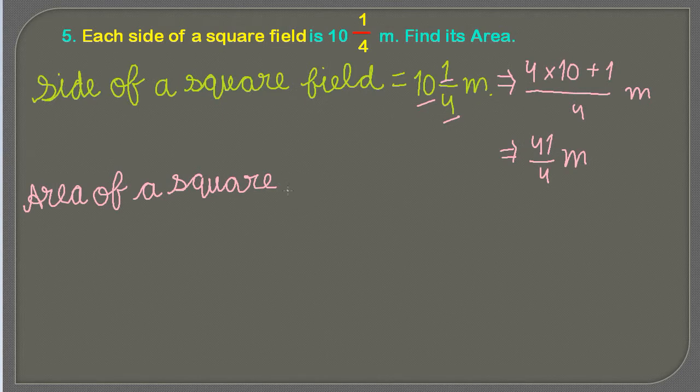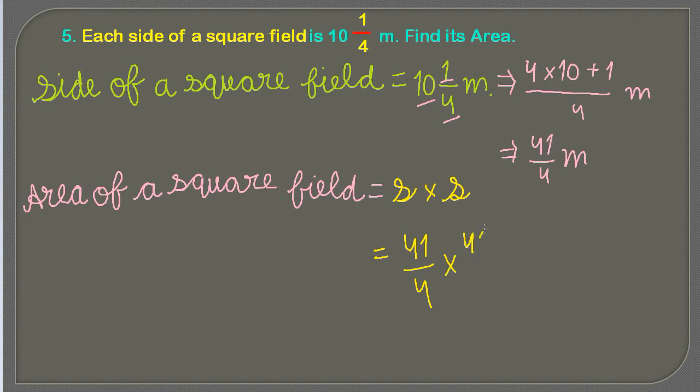Is equal to, in this case I am using side s, s into s. That would equal to 41 upon 4 multiplied by 41 upon 4, and remember the units would be meter square.